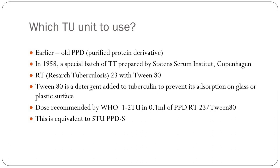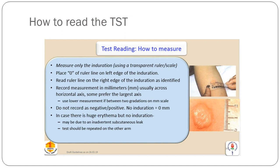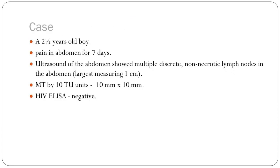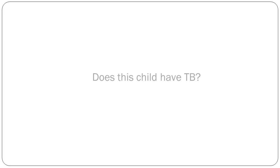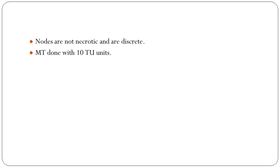A 2.5-year-old boy with pain in abdomen for 7 days, ultrasound showing non-necrotic nodes, Mantoux by 10 TU was 10 by 10 mm, HIV ELISA negative — do you think this is TB? Nodes are non-necrotic and Mantoux was done with 10 TU, so we don't take that as positive.